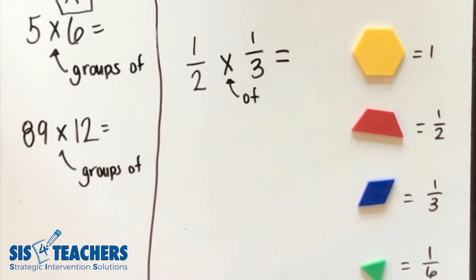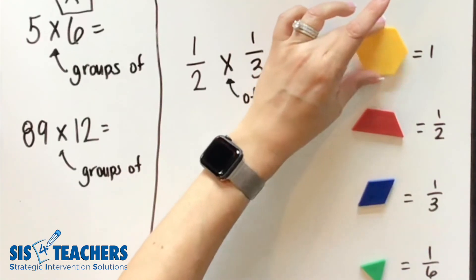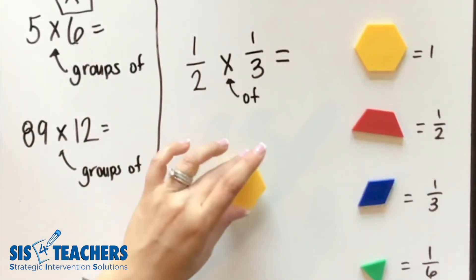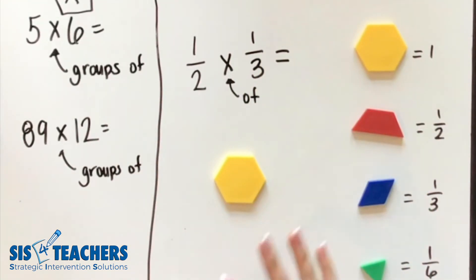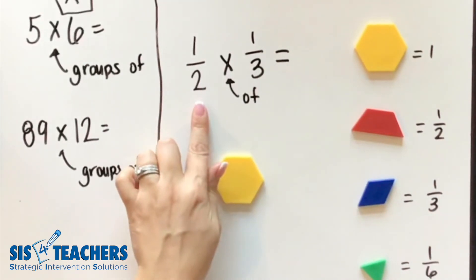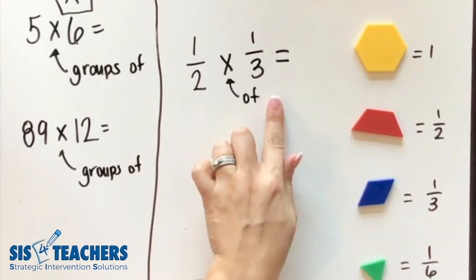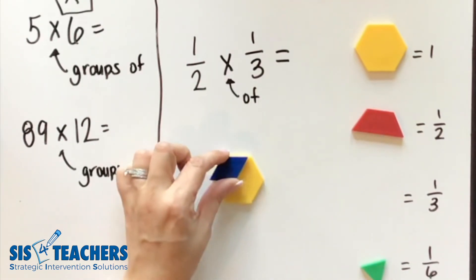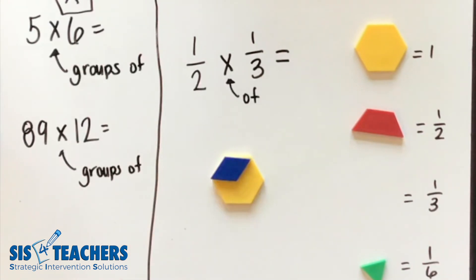Instead, we want to see how you're building this. I like to put my one whole down to make sure I remember what we're talking about in relationship to multiplying fractions. So if I said one half of a third, I need to put the third on top and re-say that statement while I'm pointing to the shape we're talking about. What is one half of one third?